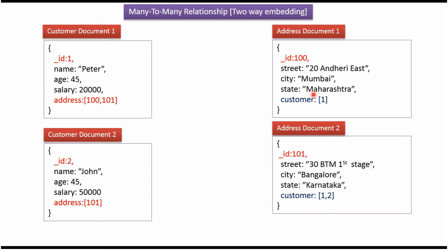In the Mumbai address, only one customer is there, so in the customer array I have put the primary key of Peter, which is 1. And in the Bangalore address, there are two customers — Peter and John. So the primary key of the Peter document and the primary key of the John document are added in the customer array. So the customer document has address information and the address document has customer information. This is called two-way embedding.